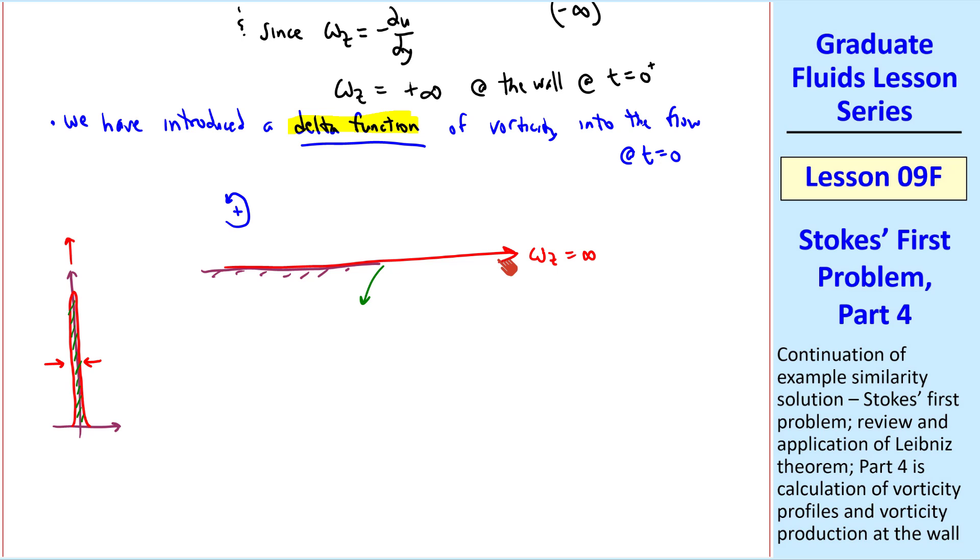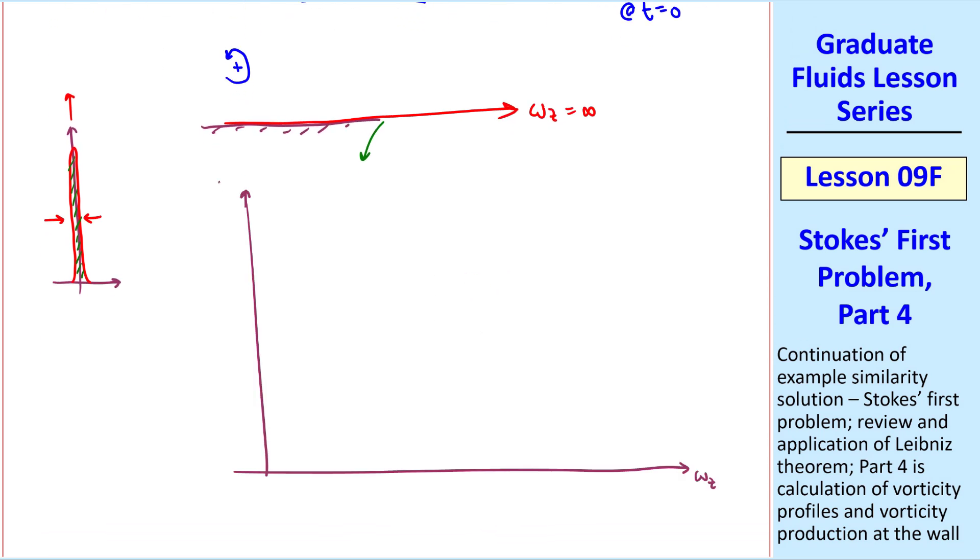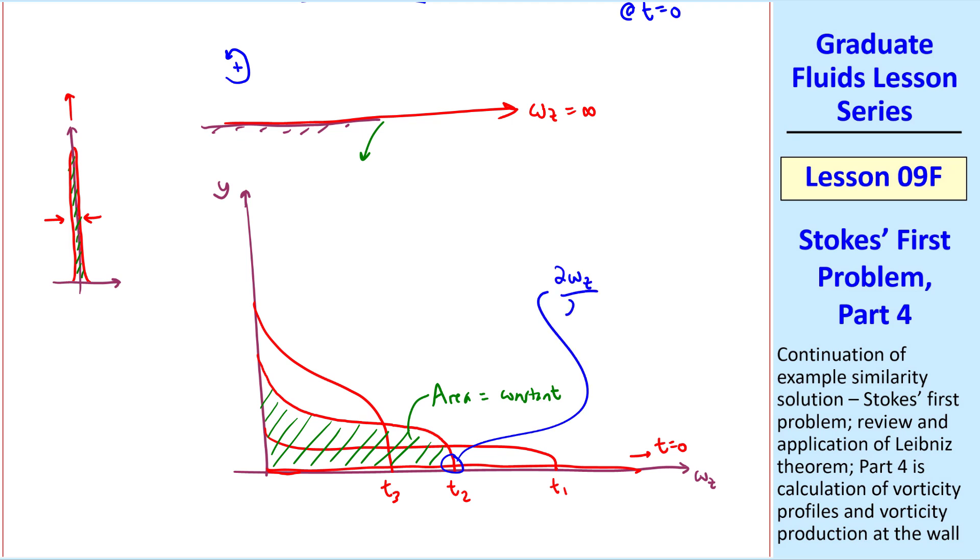We're used to thinking about delta functions vertically, where we have this sort of Gaussian-shaped distribution that is infinite in height but zero in width. But there is an area associated with it. The same thing's true here, except it's oriented 90 degrees to the right. If we plot vorticity as a function of distance from the wall y and time, we have the delta function at t equals zero. At some later time, call it t1, we have a curve that looks like that. And we have a universal similarity profile again, so that these curves all have a similar shape. But they stretch vertically by diffusion, and omega z at the wall decreases with time. It turns out that the area under any of these curves is constant. This green area is the same as the area under this curve, or even the area of the delta function.